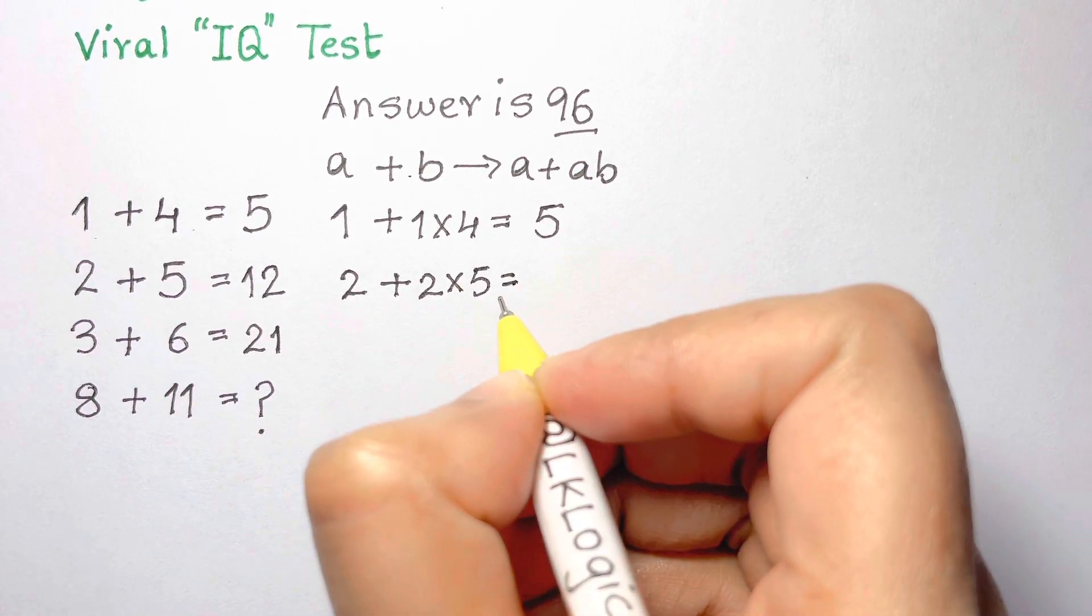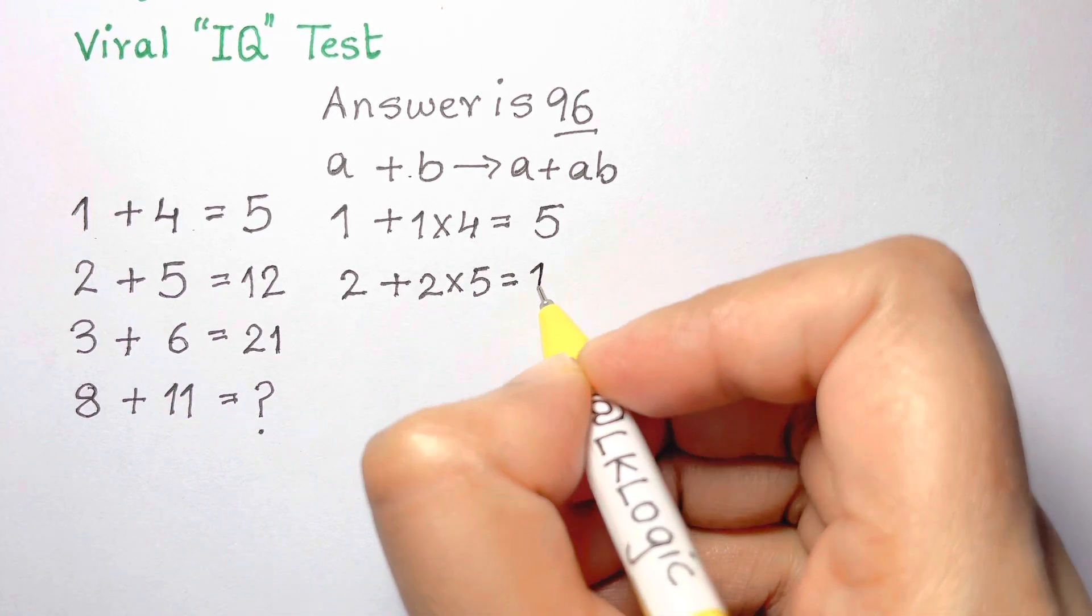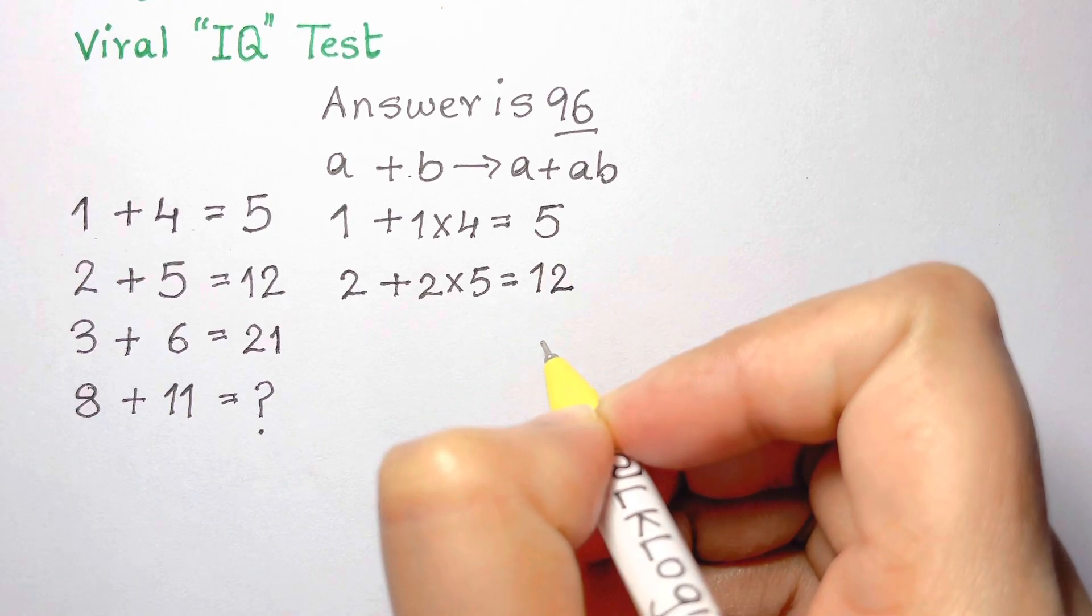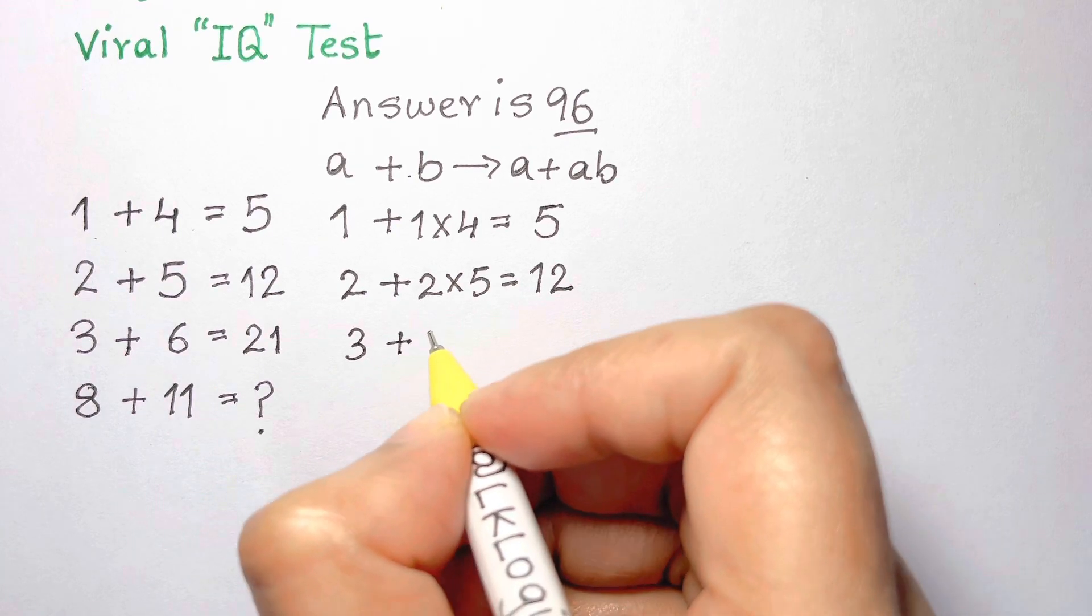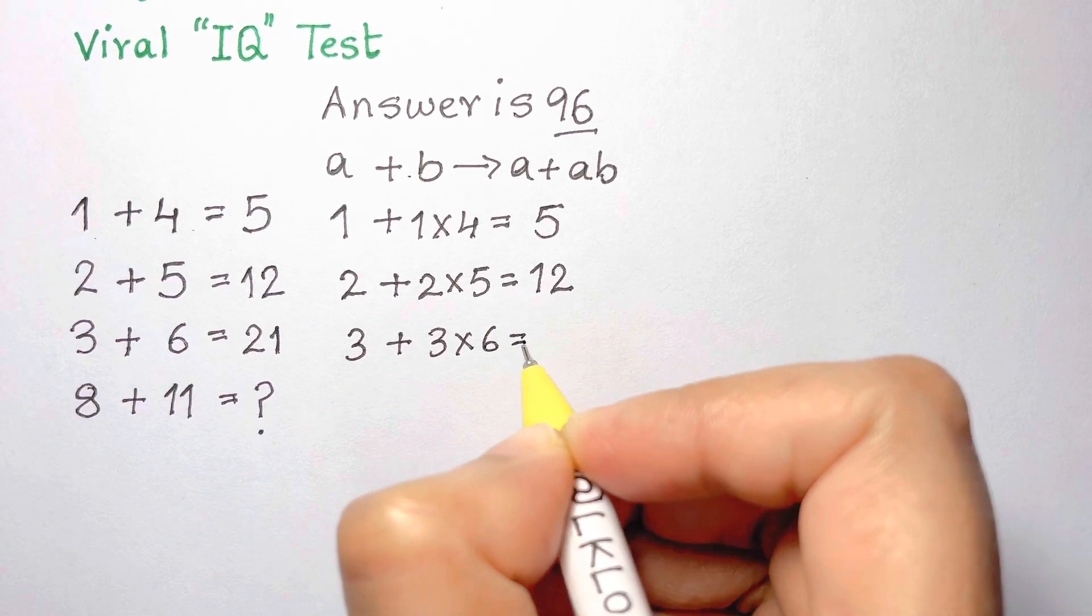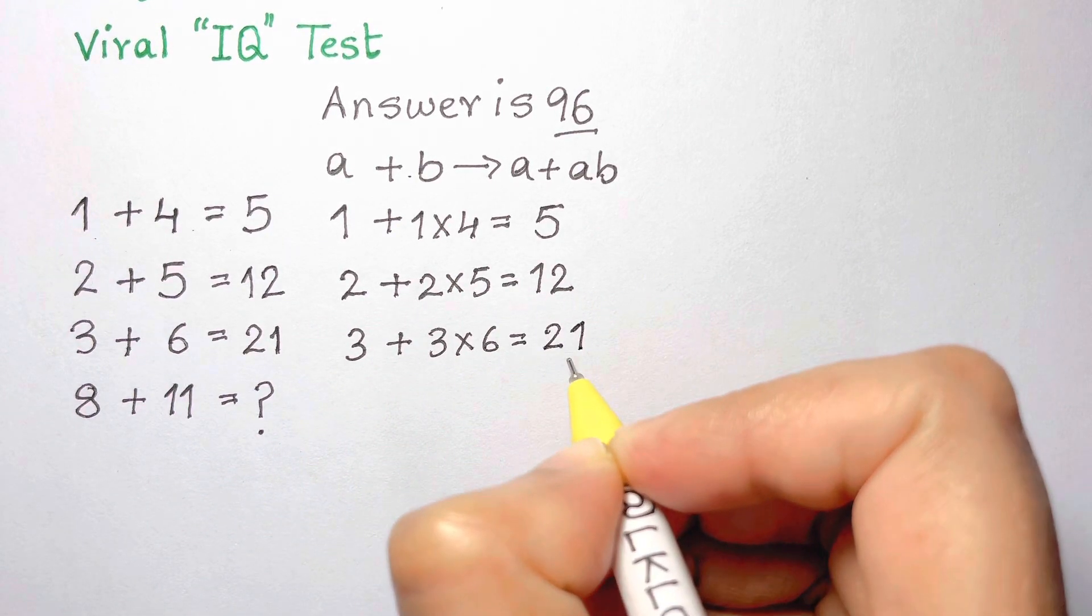2 times 5 is 10, and adding 2 gets us to the result of 12. The third line of 3 plus 6 should be interpreted as 3 plus 3 times 6, and that is equal to 21.